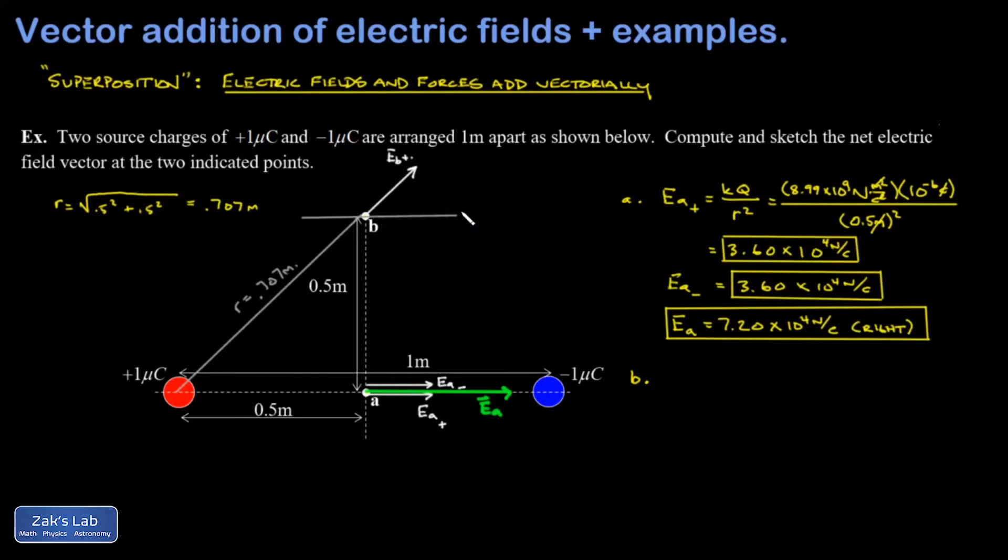And I know that when I do vector addition, I have to break the vectors into components. That's why I'm labeling this. Well, this is 45 degrees, which means this must be 45 degrees as well.